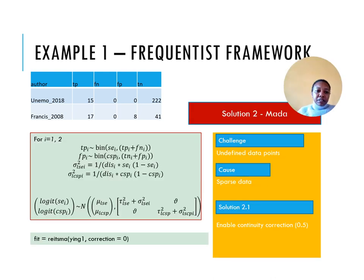The package is called meta. It implements the normal-normal model. It computes the study-specific logits and models them with bivariate normal distribution and plugs in the study-specific variances into the variance covariance matrix. Fitting the data to this model is impossible because three of the four data points will be undefined because of the zeros. If we go here, the first study and the second study, the sensitivity is 1, so the logit will be undefined and the specificity for the first study will be undefined.